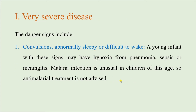Coming to the first classification — Very Severe Disease — just like in the classification for older children (2 months to 5 years), we also have certain danger signs in this age group. For example: convulsions, abnormally sleepy or difficult to awake. Young infants having these signs may be suffering from hypoxia due to pneumonia, sepsis, or meningitis. Malaria is not very common in this age group, so anti-malarial treatment is not advised without confirmation.